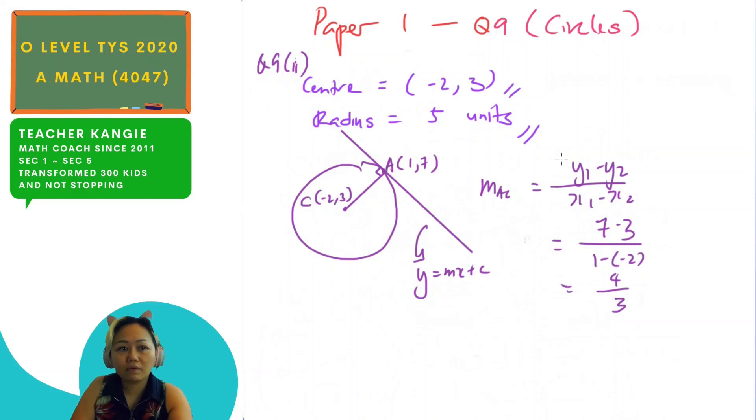But the gradient of the tangent is perpendicular. So when two lines are perpendicular to each other, gradient 1 multiplied by gradient 2 gives you negative 1. So this is an important property that you need to remember. So let's find the gradient of the tangent. So I will have to take negative 1 divided by 4 over 3, and I get minus 3 quarter.